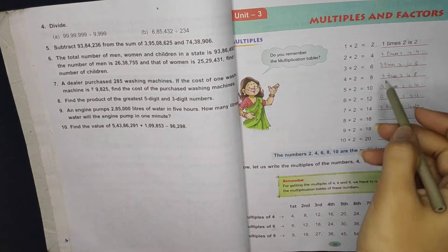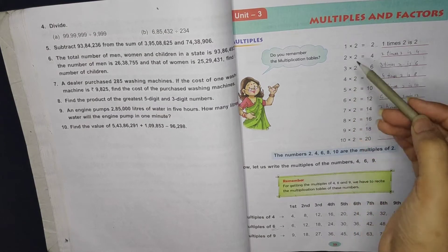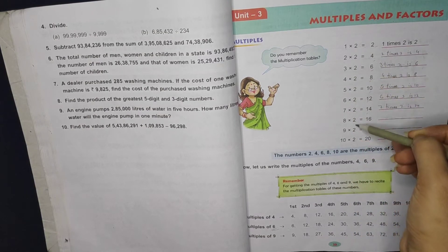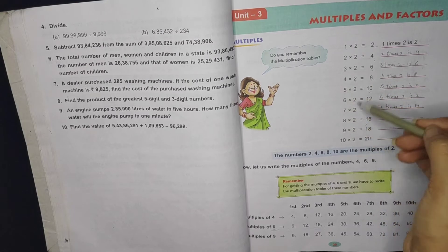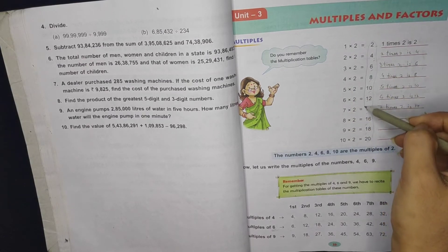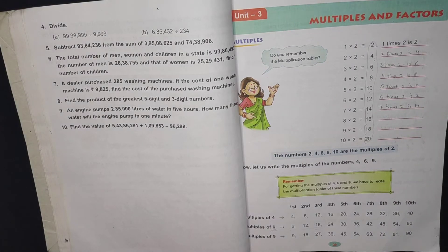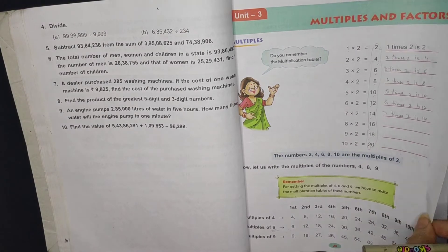Like we have done here, 2 multiplied with different numbers. Look, this 2 is stable, it is constant, but this multiplied with different numbers. These are all my multiples. So look, Worksheet number 1.